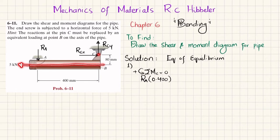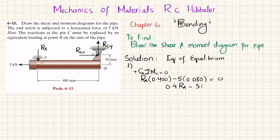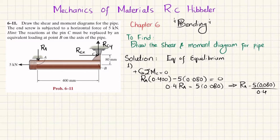The second moment about point C is from the 5 kilonewton force, with perpendicular distance 80 mm (0.080 m), producing a clockwise moment, so it is negative: minus 5 × 0.080. Their sum equals zero, giving 0.4 × R_A = 5 × 0.080, so R_A = (5 × 0.080) / 0.4 = 1 kilonewton.